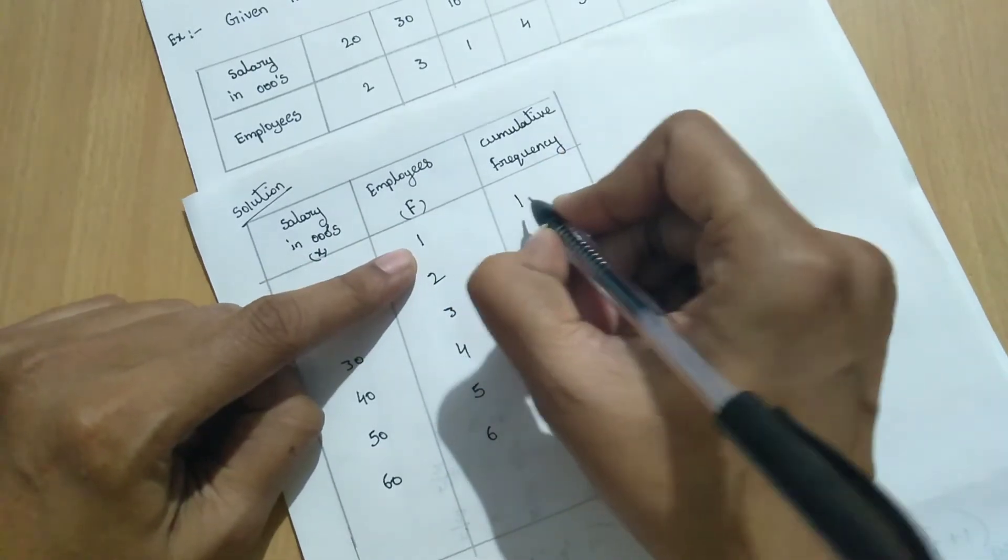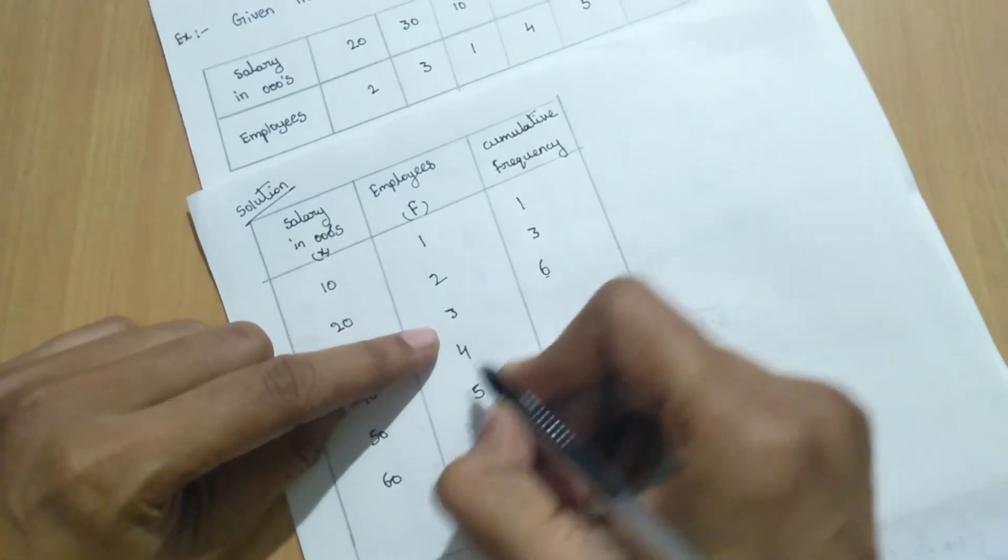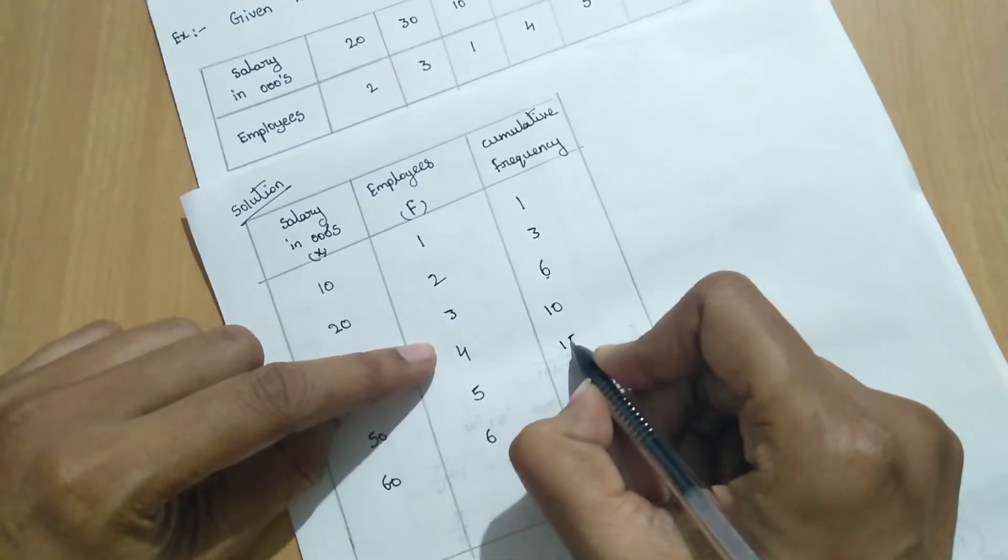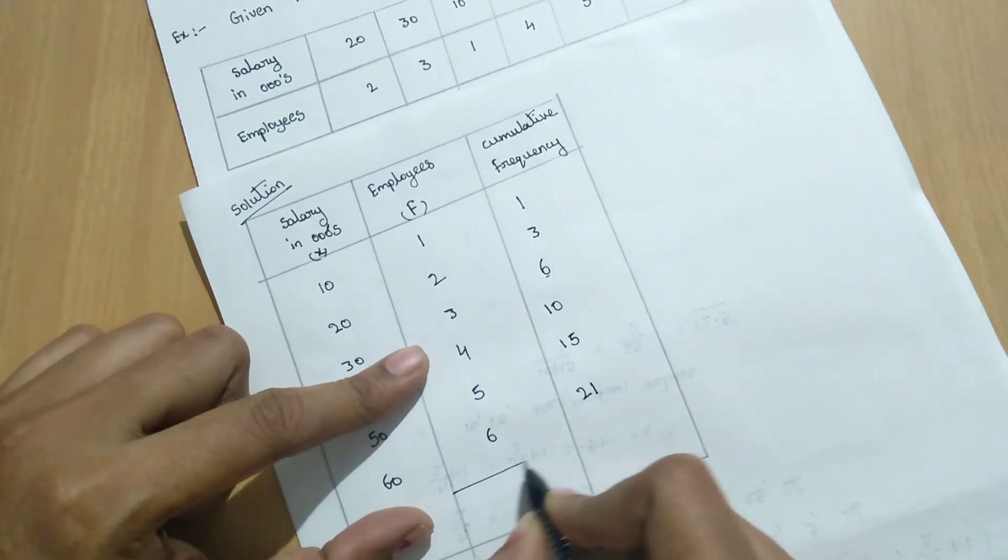Cumulative frequency means 1. 1 plus 2, 3. 3 plus 3, 6. 6 plus 4, 10. 10 plus 5, 15. 15 plus 6, 21. So what is the total frequency? Total sum of frequency is 21.